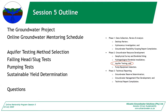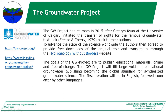The first part of the aquifer testing will go through the method selection: what methods they are, how to choose the one that you need, and then the big three — we'll do falling head or slug tests, pumping tests, and then sustainable yield determination. Then we'll go through our questions like we usually do.